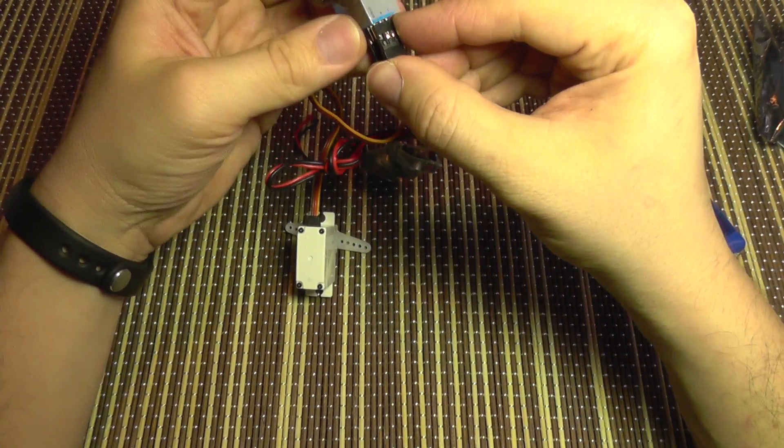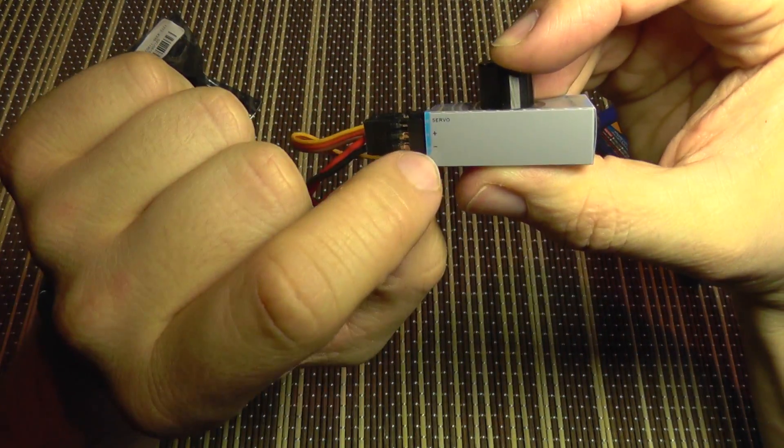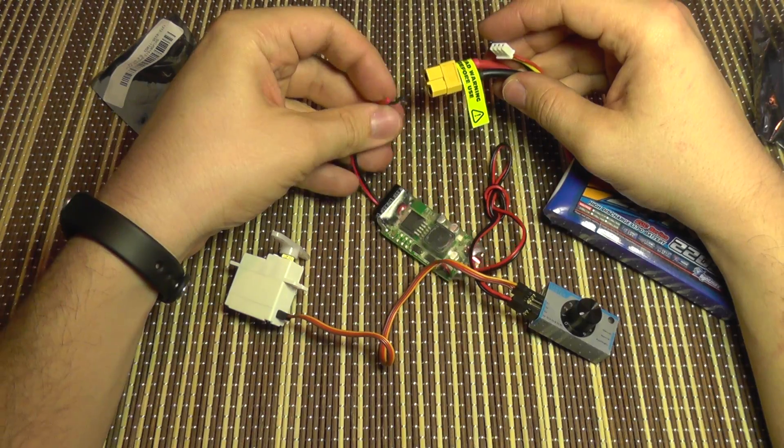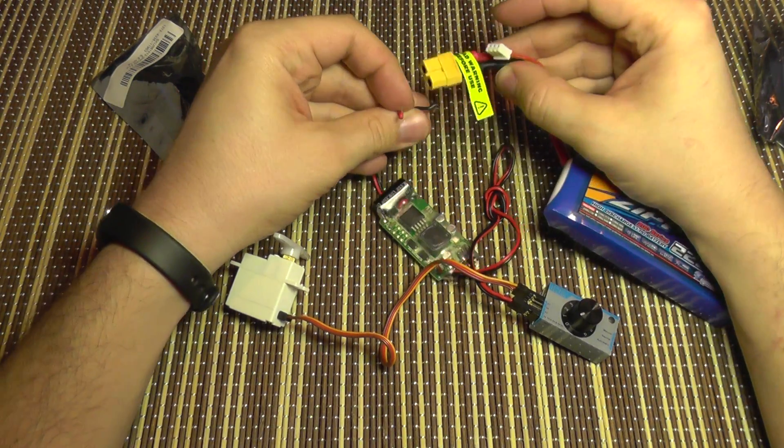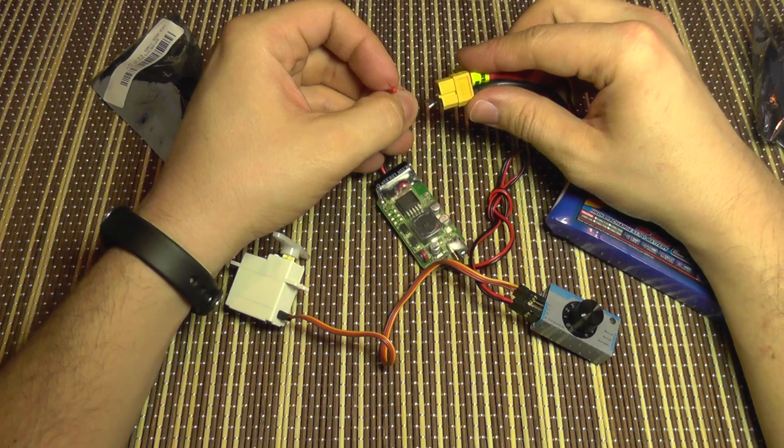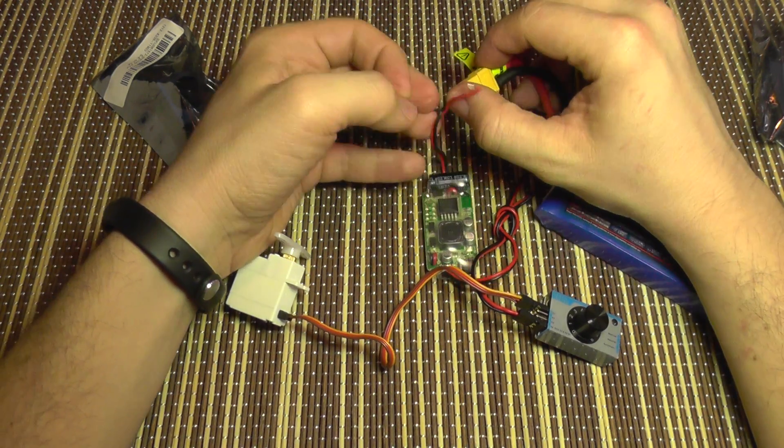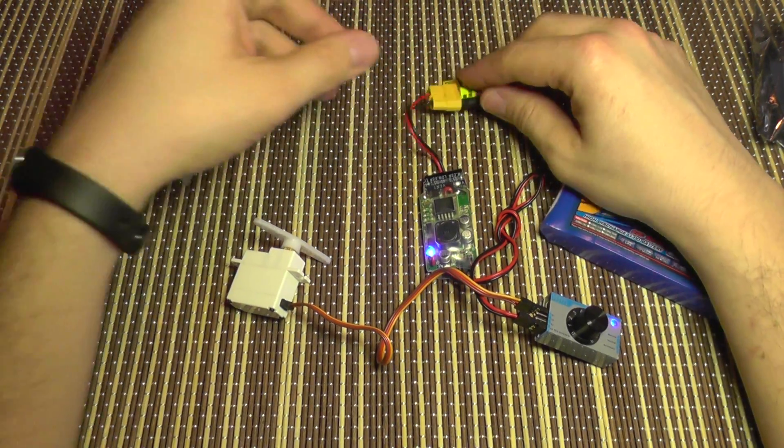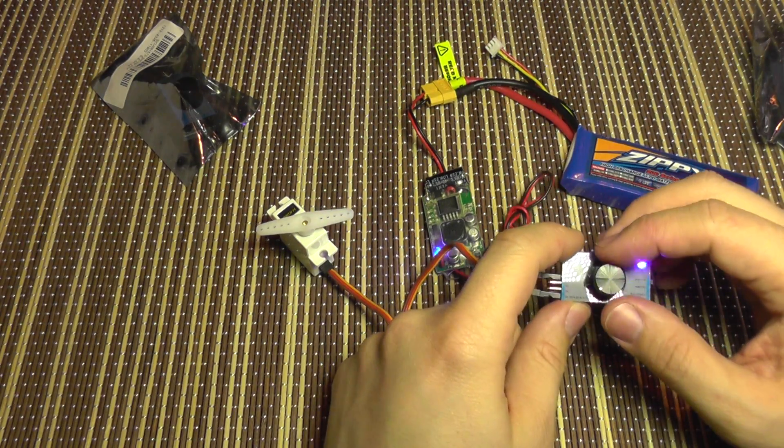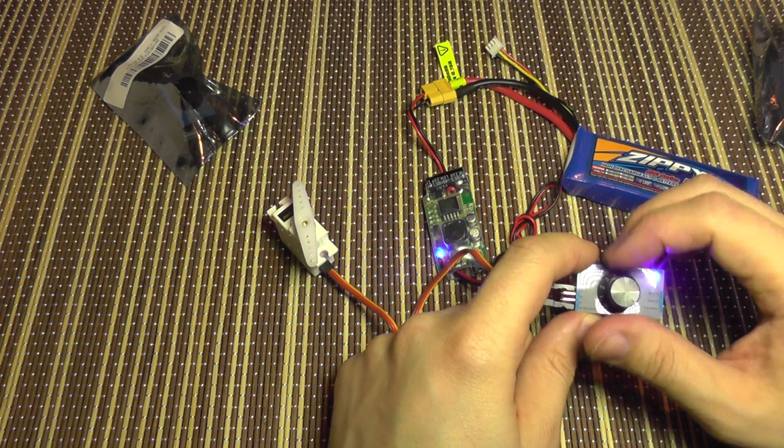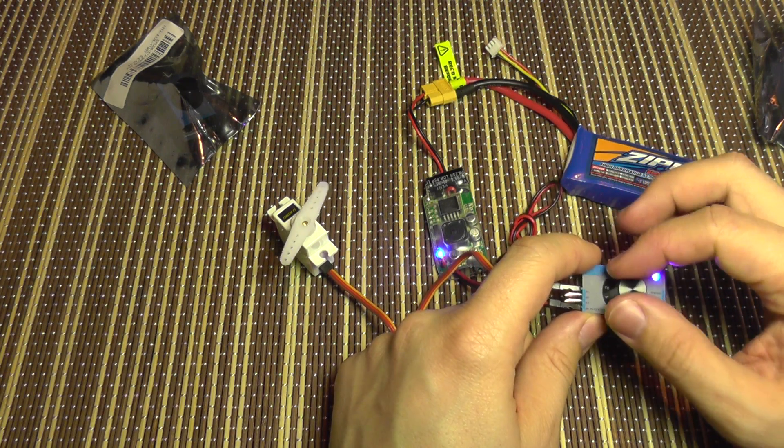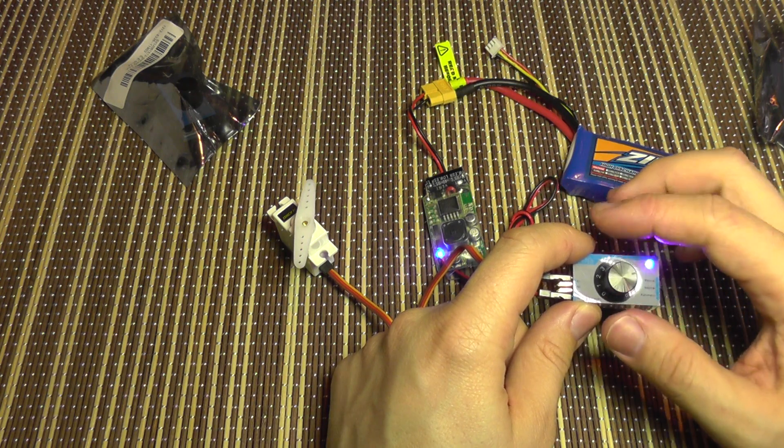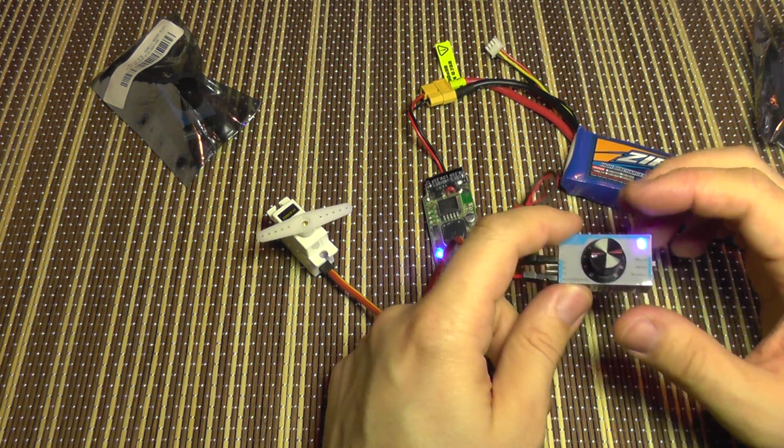Just like that with plus and minus here. I'm going to connect the lipo battery. And if I move the knob here, I have movement of the servo proportional to the movement of my button here.